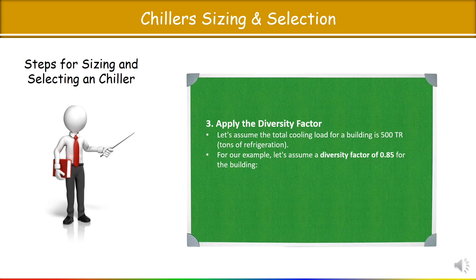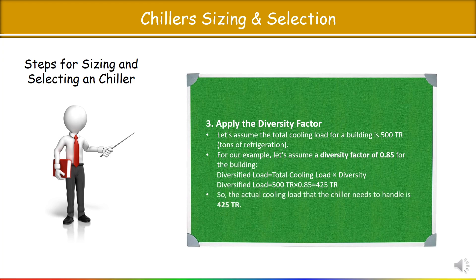With a diversity factor of 0.85, when you apply the formula, you get 425 TR. In this way we can save cost on equipment and energy consumption. You have to do the sizing of the chiller as per this diversified cooling load. The actual cooling load that the chiller needs to handle is 425 TR — remember this point.